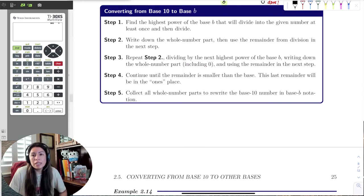In order to convert from base 10 to base B, we need to look at the base and we need to look at the base 10 number and we need to find that first divisor, the largest power of the base that can go into the base 10 number.